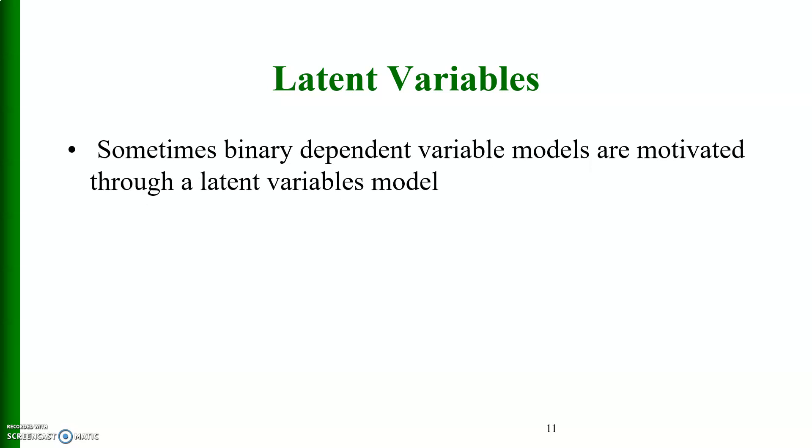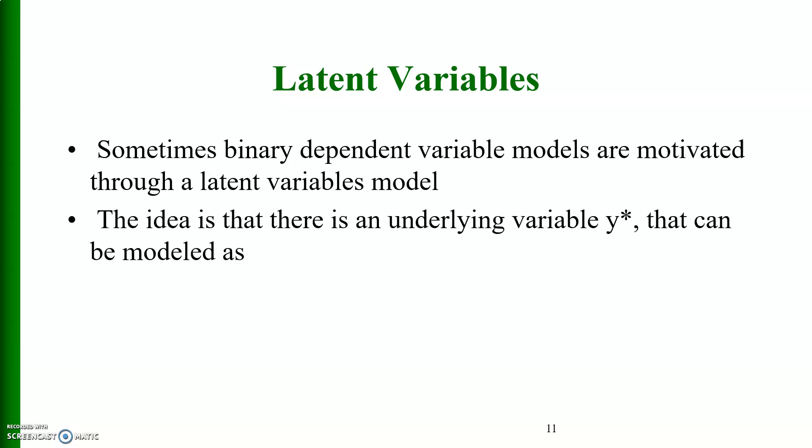Latent variables. Sometimes binary dependent variable models are motivated through a latent variables model. The idea is that there is an underlying variable y star that can be modeled as follows: y star is equal to beta naught plus x beta plus e, but we only observe y is equal to 1 if y star is greater than 0 and y is equal to 0 if y star is less than or equal to 0. So this y star is known as a latent variable.